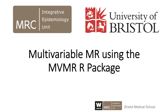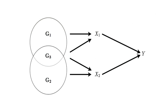To demonstrate, here is a graph in which we have two exposures, X1 and X2, an outcome Y, and three sets of genetic variants obtained from GWAS. When we consider a single exposure in the univariate MR setting, we rely upon genetic variants being associated with the outcome solely through the exposure of interest.